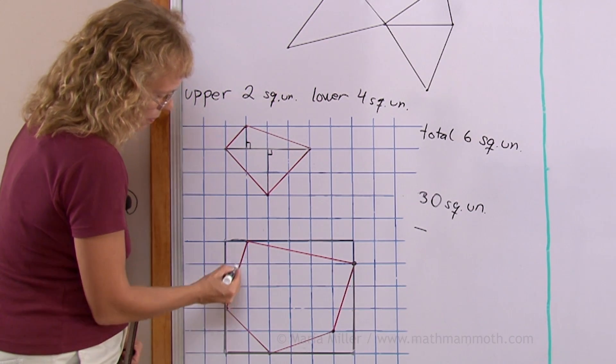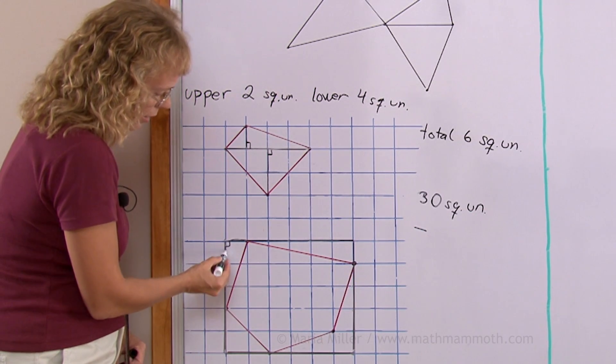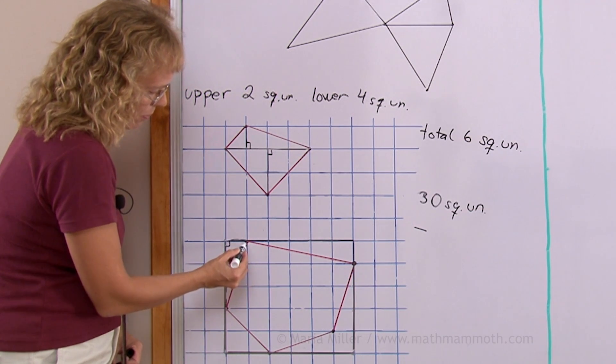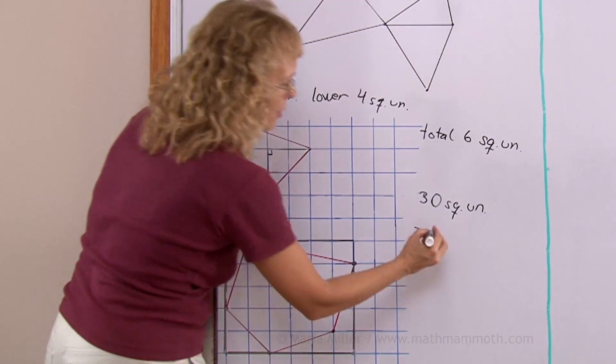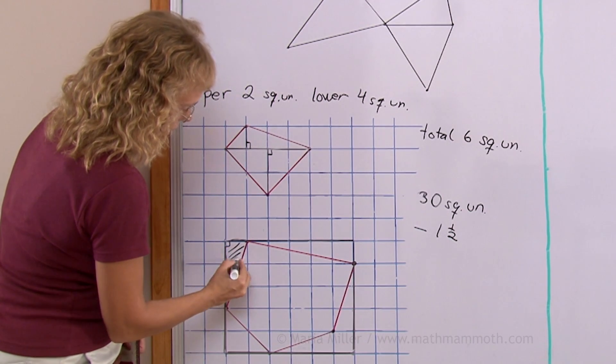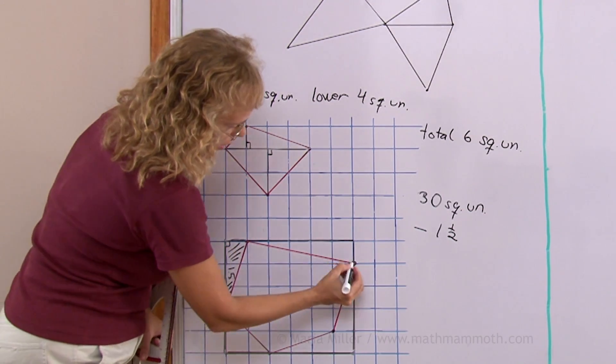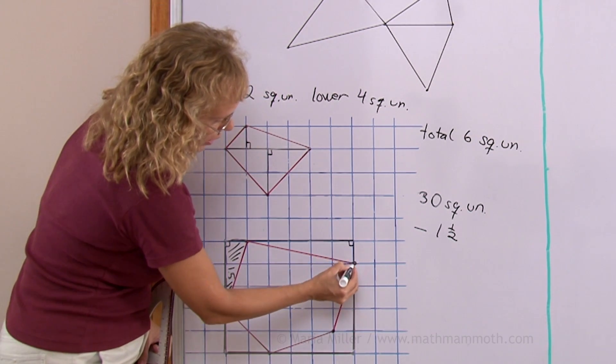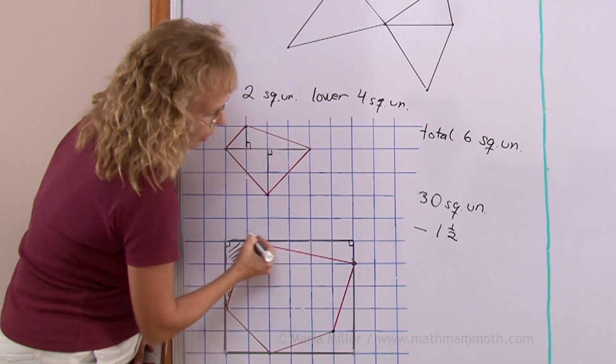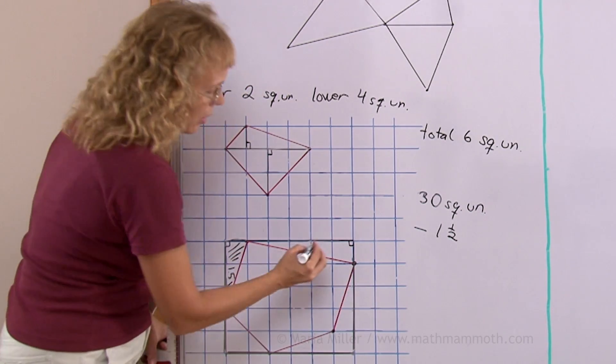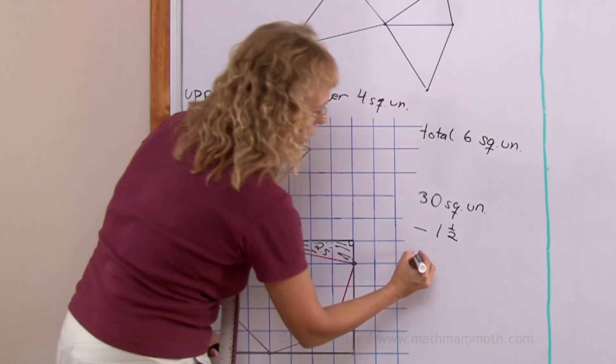This triangle is a right triangle. I choose as its base this side and then altitude this side. So I get three times one divided by two which is one and a half. This triangle here is also a right triangle with altitude one and base five units. Five times one divided by two, so this one has the area of 2.5 square units.